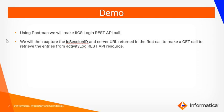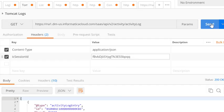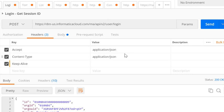Now let's jump into a quick demo where I will be showing you how to use Postman to make the IACS login REST API call. We will capture the IC session ID and server URL returned in the first call to make a GET request to retrieve the entries from the activity log REST API resource.